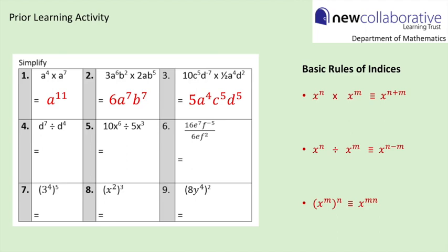Question 4: using the second basic rule of indices, d to the power of 7 divided by d to the power of 4 gives d to the power of 3. Question 5: 10 divided by 5 is 2; x to the power of 6 divided by x to the power of 3 is x to the power of 3, because 6 minus 3 is 3. Question 6: 16 divided by 6 is 8 over 3; e to the power of 7 divided by e to the power of 1 is e to the power of 6; f to the power of negative 5 divided by f to the power of 2 is f to the power of negative 7. We can rewrite that as 8e to the power of 6 over 3f to the power of 7.